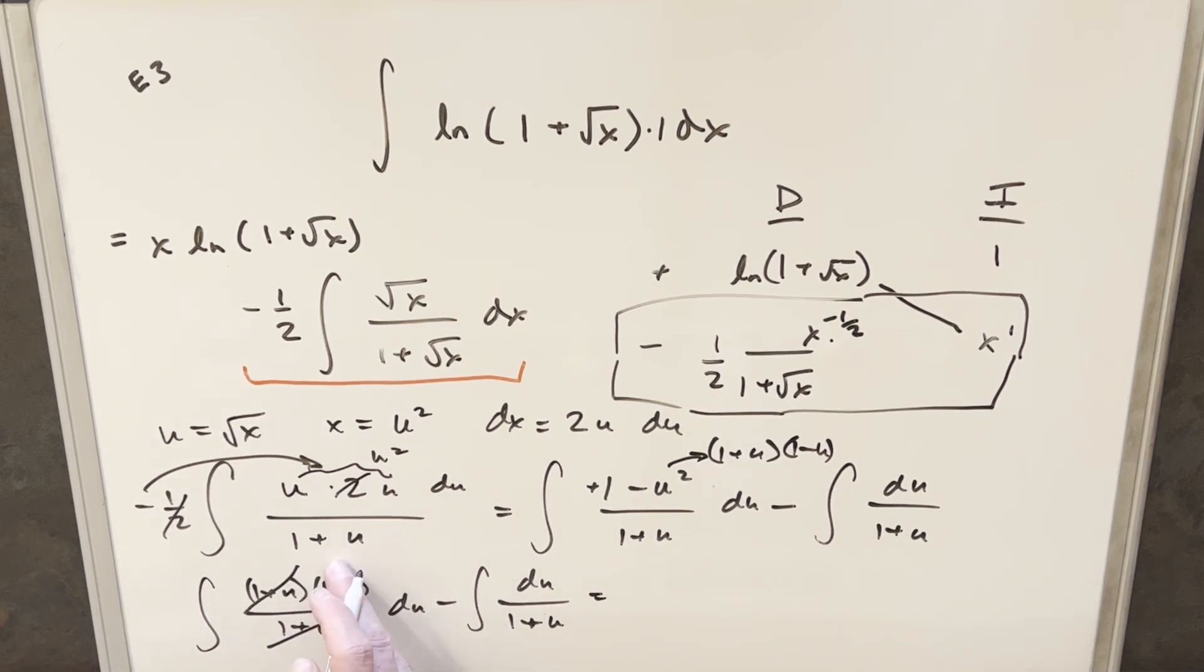So what I'm going to do is just go ahead and integrate here. So we're integrating one. That's going to give me u. Integrating a minus u is going to be minus u squared over two. And then here, this is going to be just natural log absolute value one plus u.